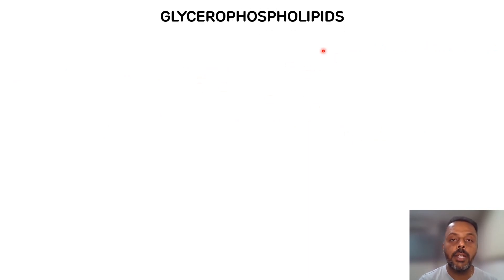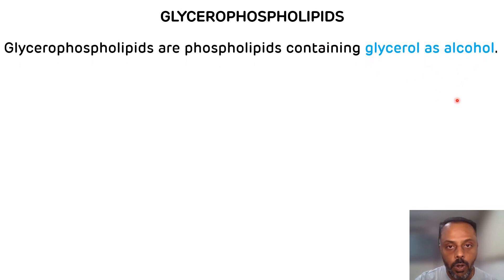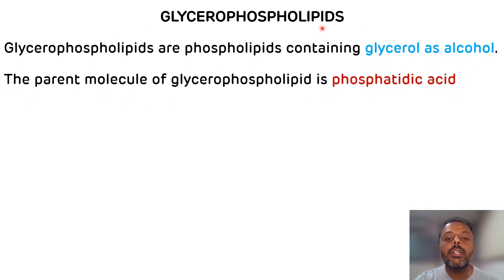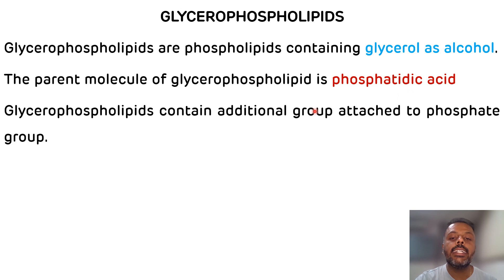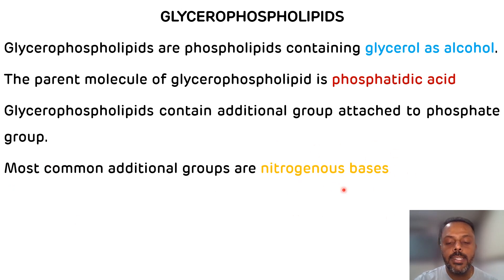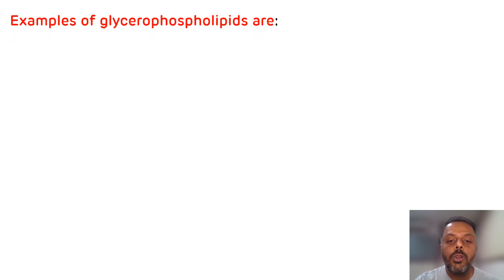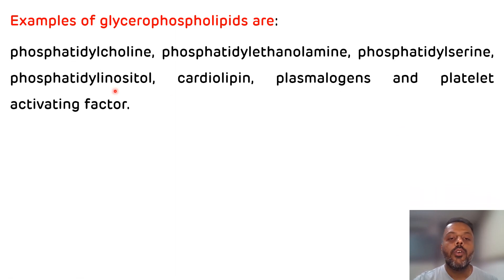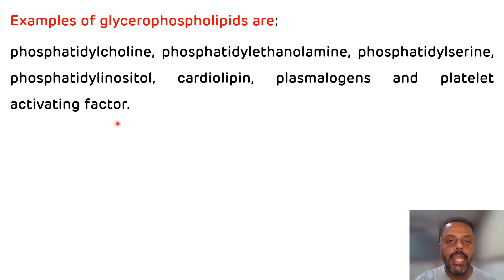Glycerophospholipids are phospholipids which contain glycerol as an alcohol. The parent molecule of glycerophospholipids is phosphatidic acid. Glycerophospholipids contain an additional group attached to the phosphate group, and this additional group can be various nitrogenous bases. The examples of glycerophospholipids are phosphatidylcholine, phosphatidylethanolamine, phosphatidylserine, phosphatidylinositol, cardiolipin, plasmalogens, and platelet-activating factor.